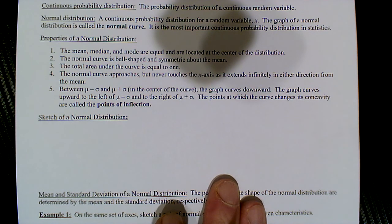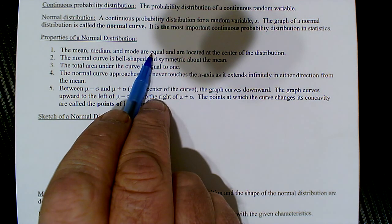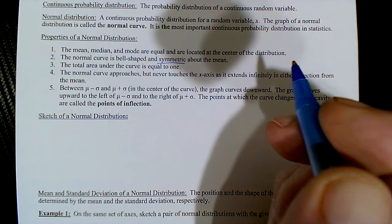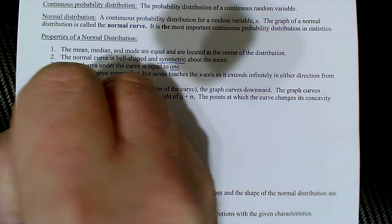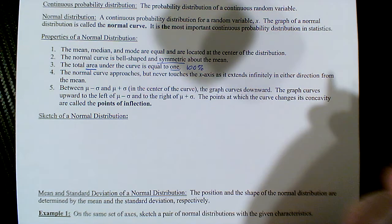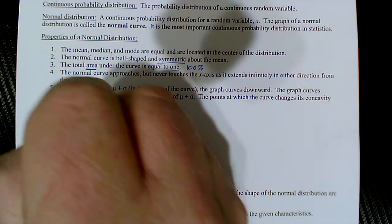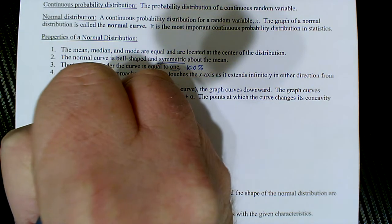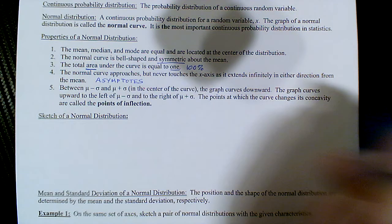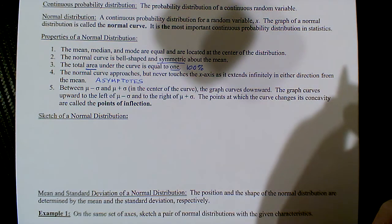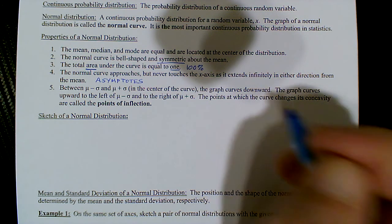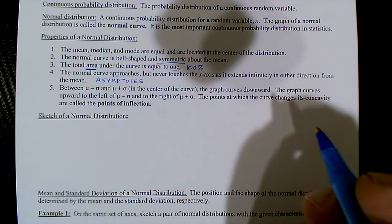The normal distribution has the following properties: the mean, median, and mode are all equal and located at the center. It's symmetric about the mean, and the total area equals 1 or 100%. There are asymptotes — the curve never touches the x-axis as it extends infinitely in either direction from the mean.